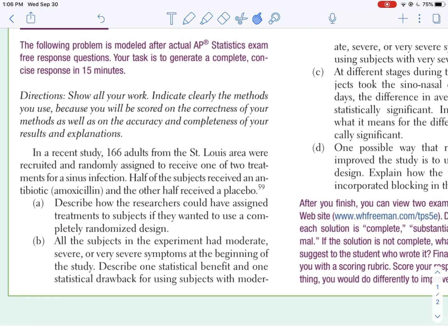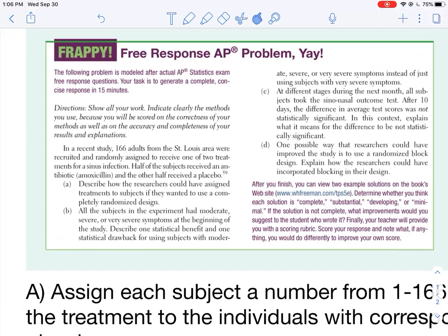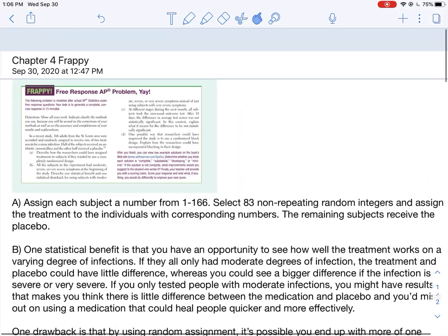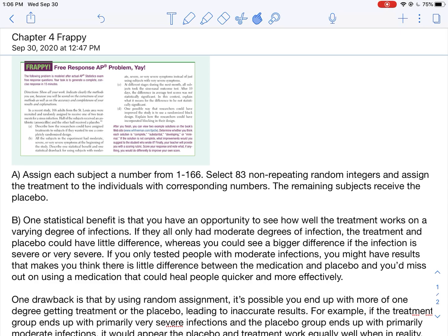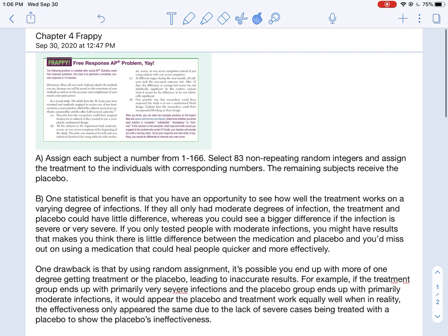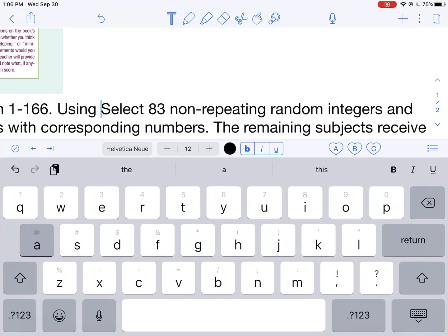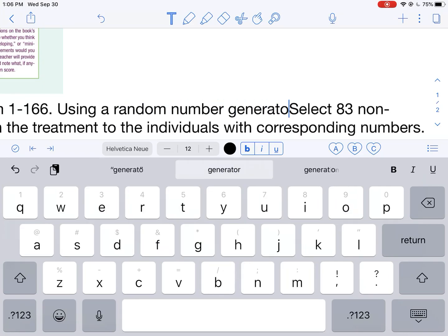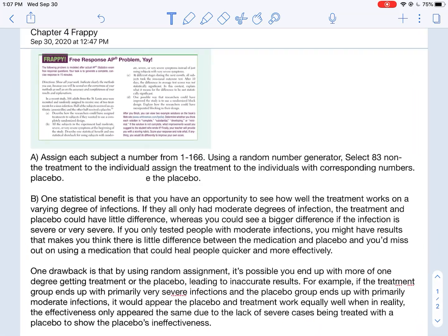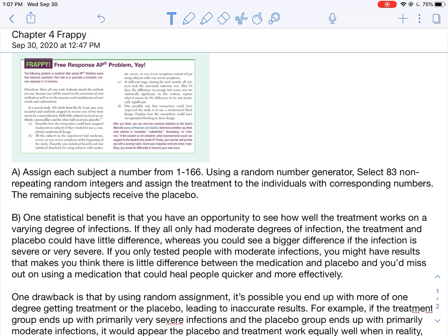What you're hoping is that in the course of doing that, since you're using random assignment, you get the confounding variables all kind of end up on both sides and any effects that they would have on your results would cancel each other out. That's kind of an idealistic way of looking at it. Now here's how I designed mine. I'll share with you the details. I would assign each subject a number from 1 to 166. I would select 83 non-repeating random integers, and I'm even going to put a detail in here, how would I do that? I forgot that. I'm going to use a random number generator.